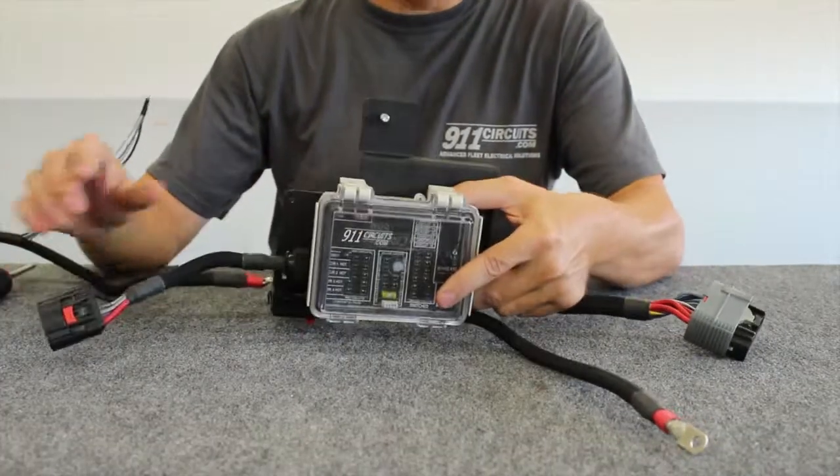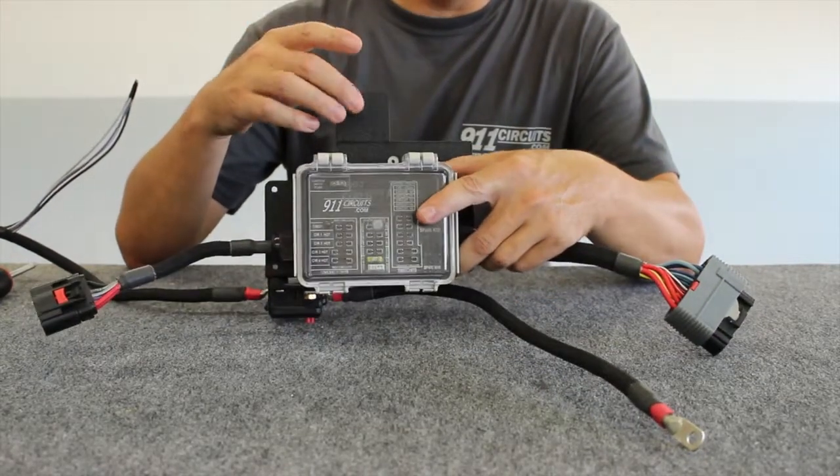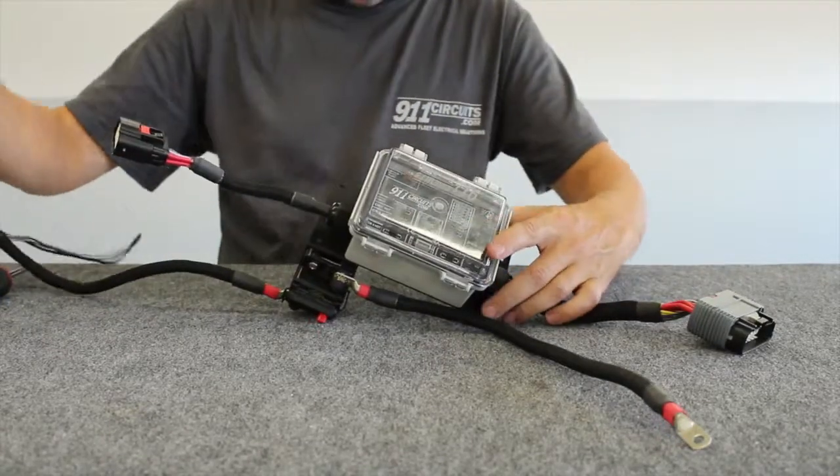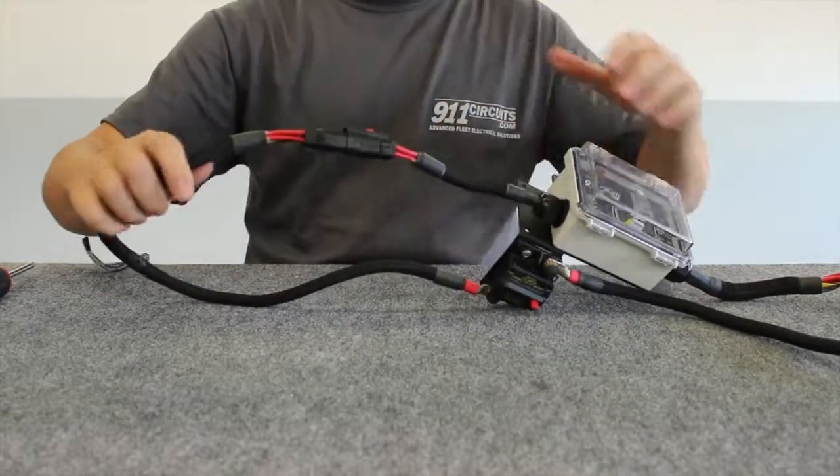So the mounting bracket, the vehicle specific mounting brackets, are no holes drilled. This mounts to the factory Tahoe through this stud. Now, your power connectors are all waterproof, and they just plug in.